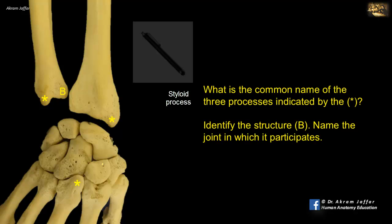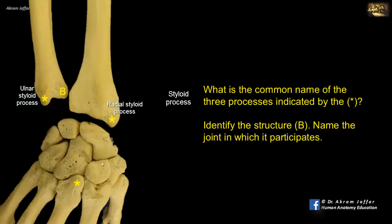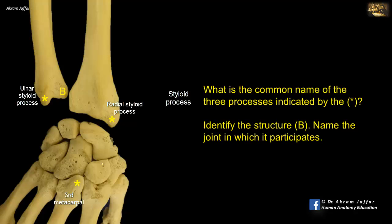Styloid means resembling a stylus or pen. We have a styloid process of the radius, a styloid process of the ulna, and the third metacarpal bone also has a styloid process — all are palpable. The styloid process of the radius is usually at a more distal level than that of the ulna and can be palpated in the anatomical snuffbox. The styloid process of the third metacarpal can be felt on the dorsum of the hand, about three to four centimeters distal to the dorsal tubercle of the radius. The third metacarpal is the only metacarpal that has a styloid process.